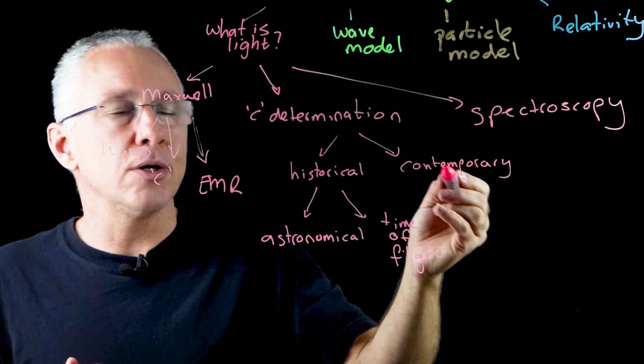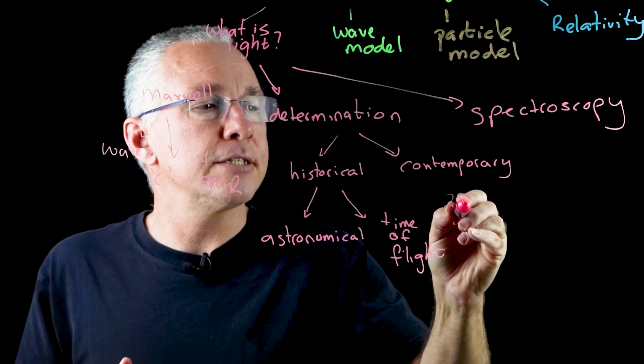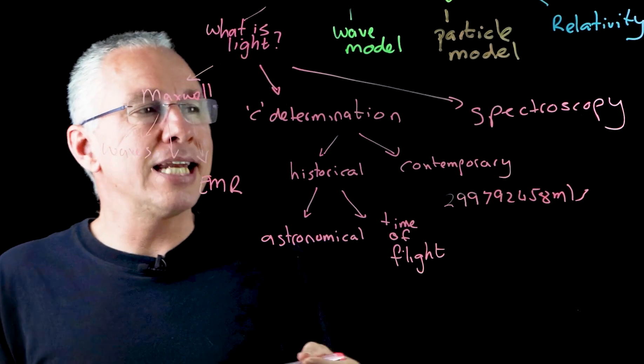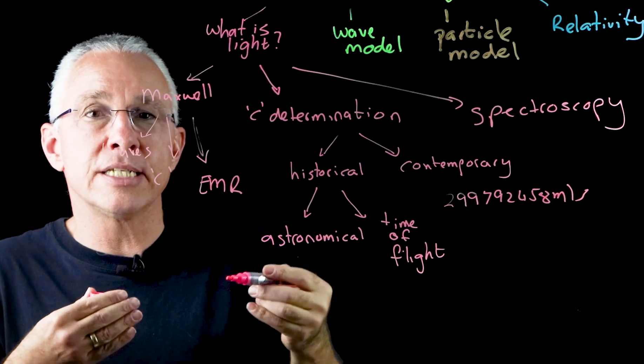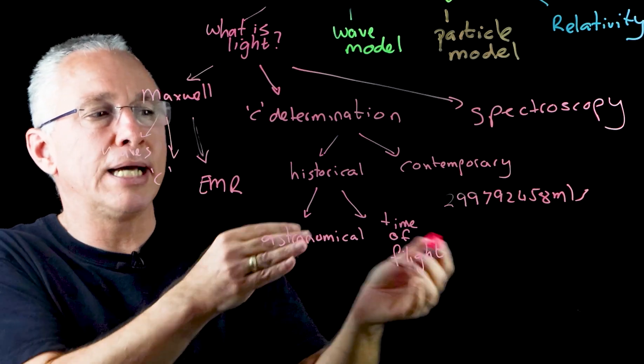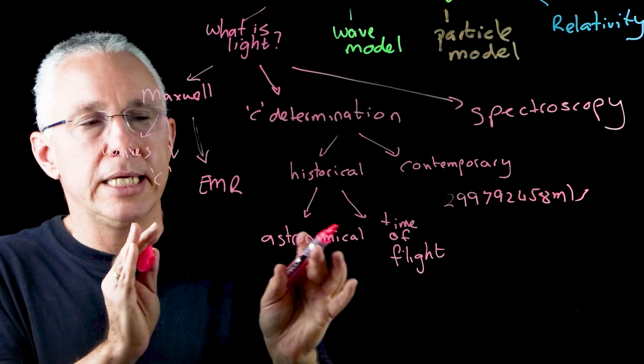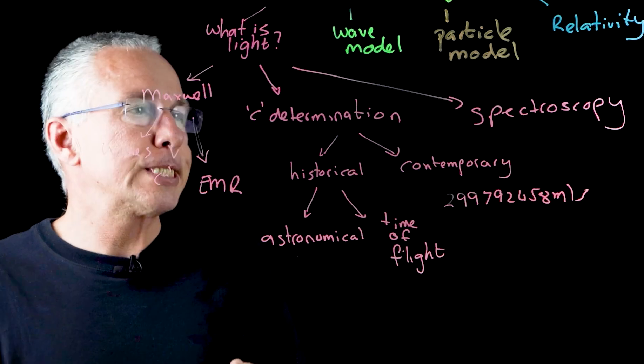And so from 1983 onwards, the speed of light is now this value, meters per second. And that is actually the value that is set. And we now define various other units based on that particular value. And that's the key thing you need to remember in the syllabus context, is that the speed of light now becomes the standard for other units.